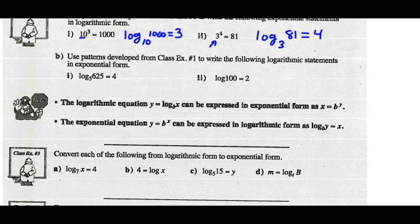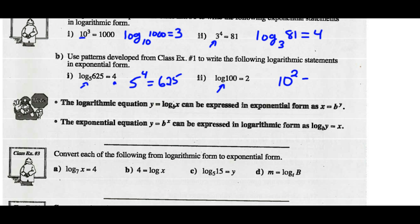Going the other direction: write the logarithmic statements in exponential form. The base of the logarithm is 5, so the base of my power is 5. Since a logarithm is just equaling an exponent, 5 to the 4 equals 625. And over here, the base of our logarithm is 10, so 10 squared equals 100. So a logarithmic equation y equals log of x base b can be expressed in exponential form as x equals b to the exponent y. Equivalently, y equals b to the x can be expressed as x equals the log of y base b.